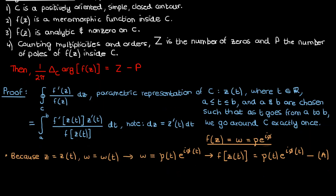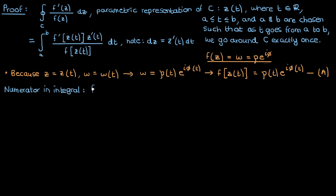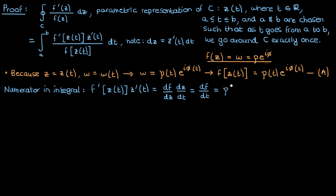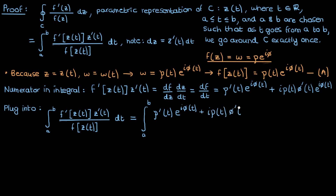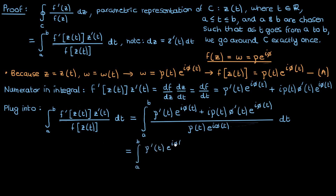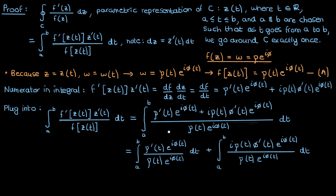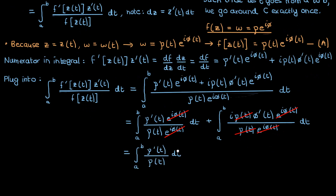Let's go back to our integral and put the numerator in terms of rho and phi. We can write f prime as df by dz and z prime as dz by dt, then use the chain rule to write the whole numerator as df by dt. Using equation A, differentiating f with respect to t gives us rho prime of t times the exponential of i times phi, plus i times rho of t times phi prime of t times the exponential of i times phi. Plugging this back into our integral and replacing f of z in the denominator using equation A, we split up the numerator to get two integrals, and after cancelling common terms we end up with two relatively simple integrals.